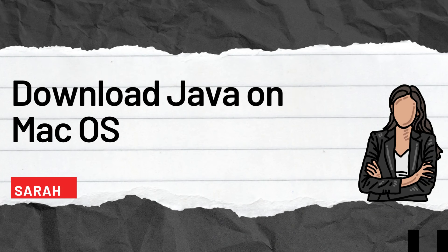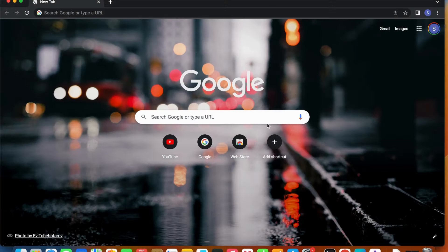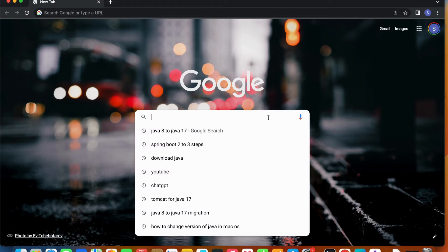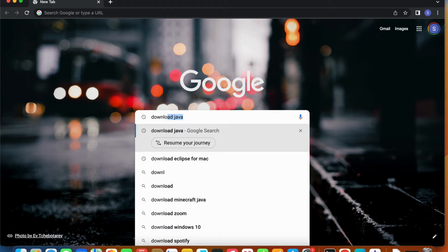Now that we know what we can do with Java and what Java is, we can start with the course. In the next video, we will download Java 20 on Mac OS — the process is almost similar for Windows. Please let me know in the comments if you'd like a video for downloading Java 20 on Windows. So let's download the latest version of Java, which is Java 20.